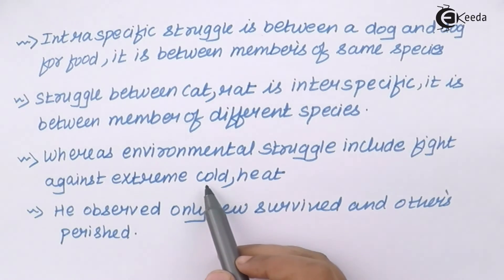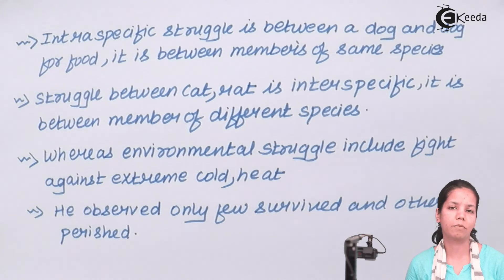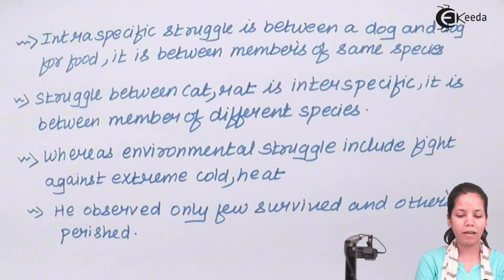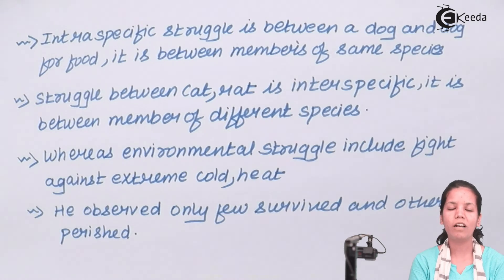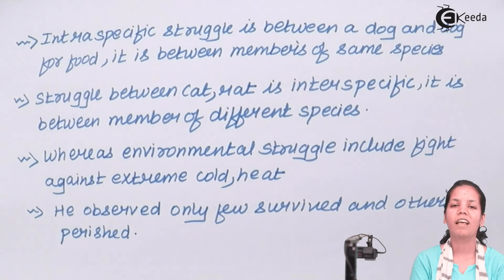What Darwin observed was that only few organisms who were fit and fine could do the fight and survived, whereas others perished and eventually died and reduced the pool of organisms. So students, in this part of the chapter we did study about struggle for existence and how organisms that were fit and fine stayed. I hope you are very clear with this concept. Thank you.